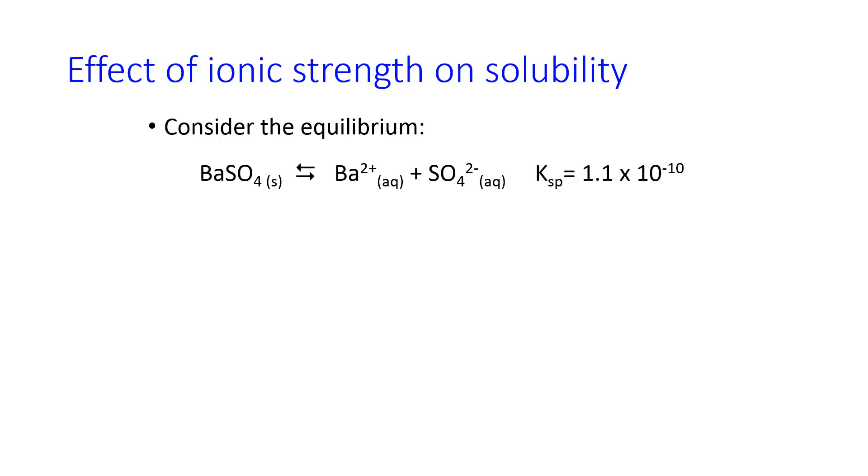So we can consider an equilibrium of barium sulfate dissolving into ions in its solution, and this is represented by some KSP. If we do the math at equilibrium, each of these ions is going to have about 3 times 10 to the minus 5 molar concentration.